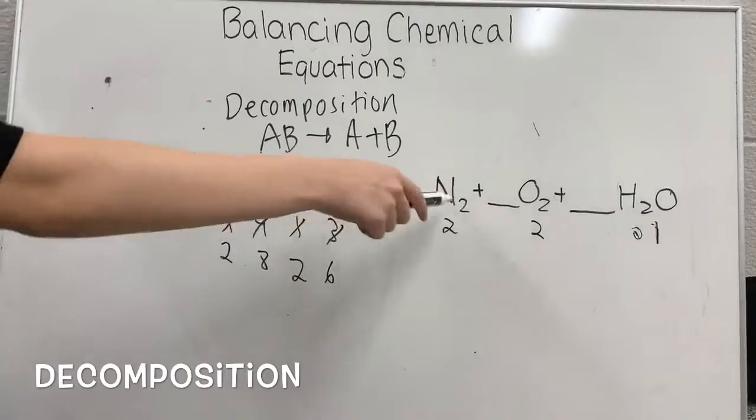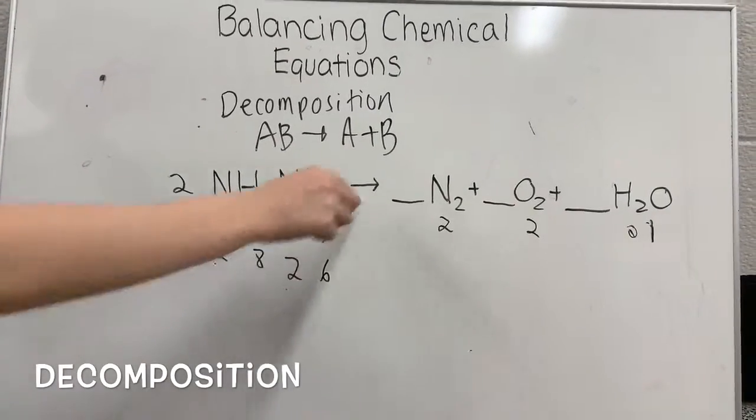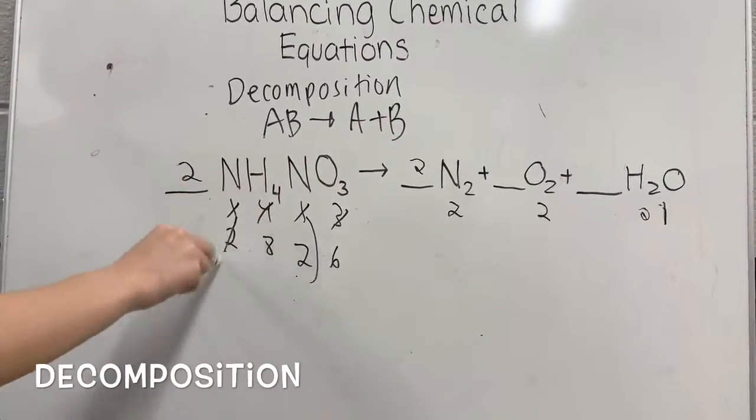So when we look here, this is the only thing that has nitrogen and we have two twos. So we're going to put a two here. This is satisfied. We can get rid of this.